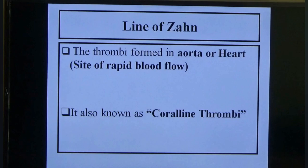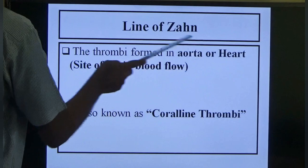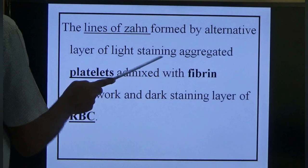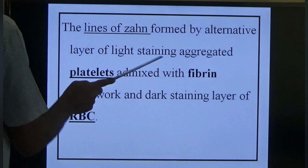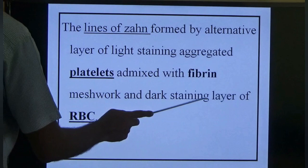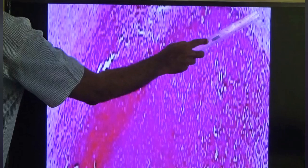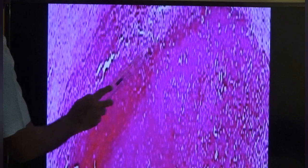Lines of Zahn (also called coralling thrombi): thrombi formed in the aorta or heart at sites of rapid blood flow. They are formed by alternating light-staining layers of aggregated platelets mixed with fibrin meshwork and dark-staining layers of RBCs. The light layer is at the periphery (platelets and fibrin) and the dark layer is in the center (RBCs) — this alternating pattern is known as lines of Zahn.